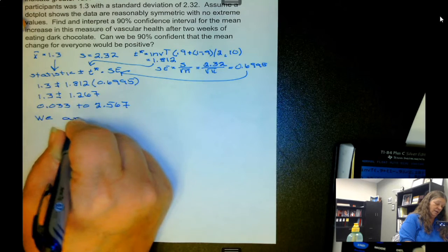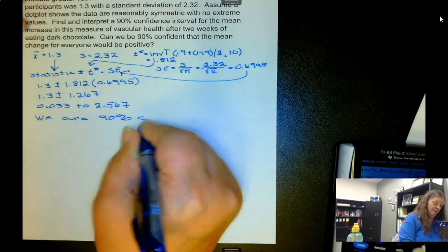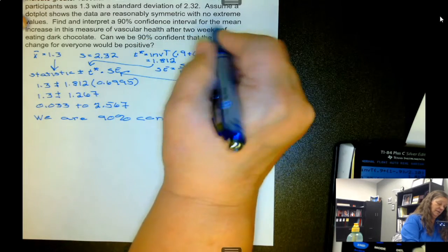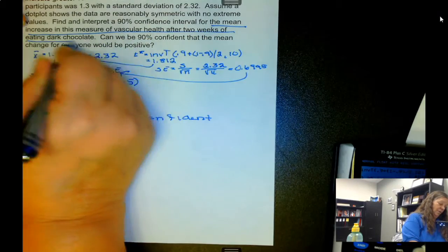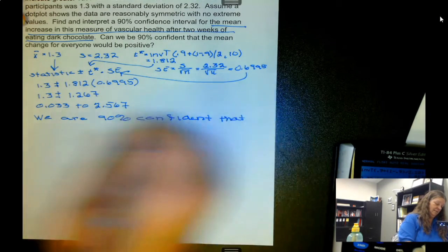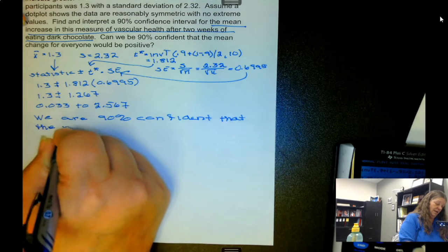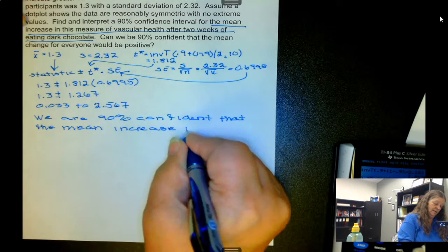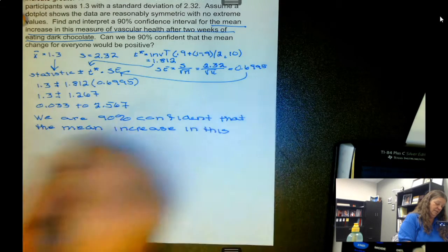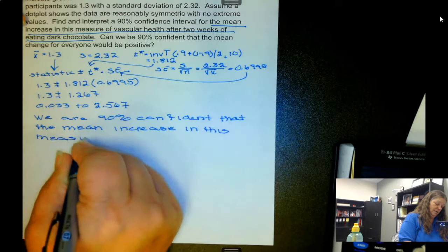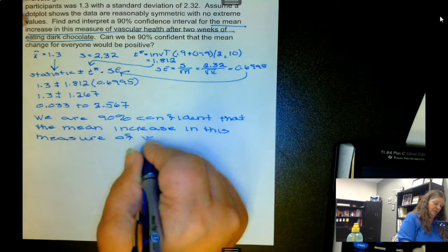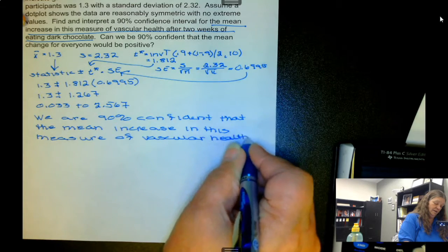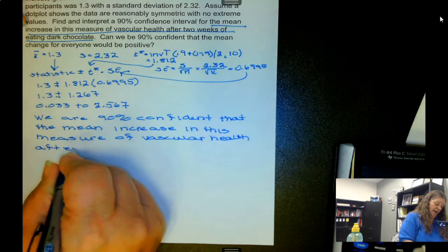Now our interpretation: we are 90% confident, then we go back to the problem that the mean increase in this measure of vascular health